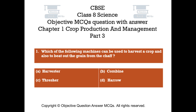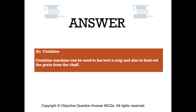Question number 1. Which of the following machines can be used to harvest a crop and also to beat out the grain from the chaff? Option A: Harvester. Option B: Combine. Option C: Thresher. Option D: Harrow. The right answer is option B — Combine. A combine machine can be used to harvest a crop and also to beat out the grain from the chaff.